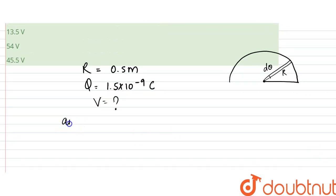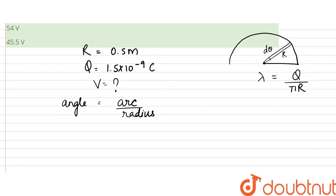We know angle equals arc by radius. Here, the linear charge density λ would be equal to q by πr. That is the total length.